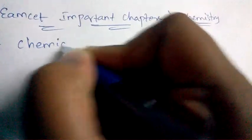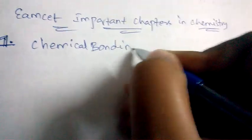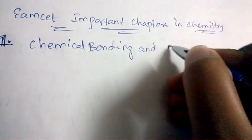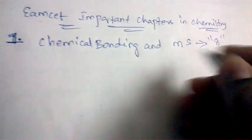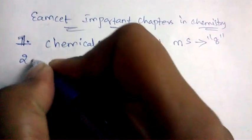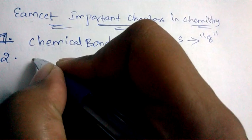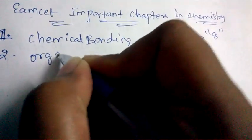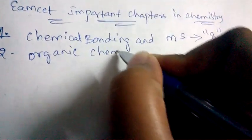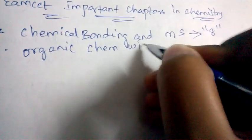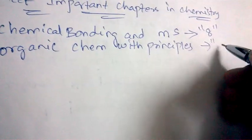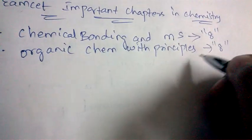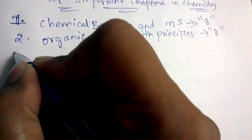...weightage chapter is Chemical Bonding and Molecular Structure. From this, eight questions will be appearing. This is having the highest weightage. The next chapter which is important is Organic Chemistry with Principles and Techniques. From this, eight questions will be appearing. This is also a very important chapter.